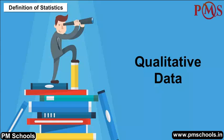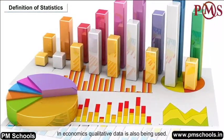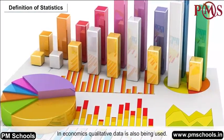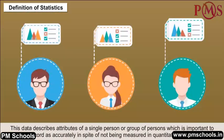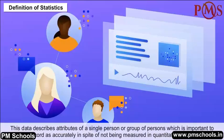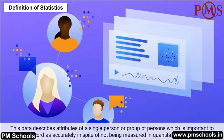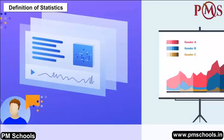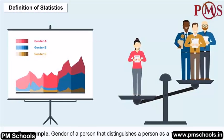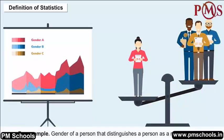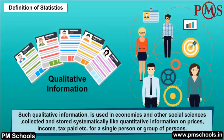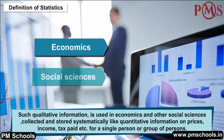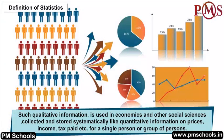Qualitative data: In economics, qualitative data is also used. This data describes attributes of a single person or group of persons, which is important to record accurately despite not being measured in quantitative terms. For example, the gender of a person — distinguishing a man or woman — is qualitative information. Such qualitative information is used in economics and social sciences, and is stored systematically alongside quantitative information on prices, income, and tax paid.